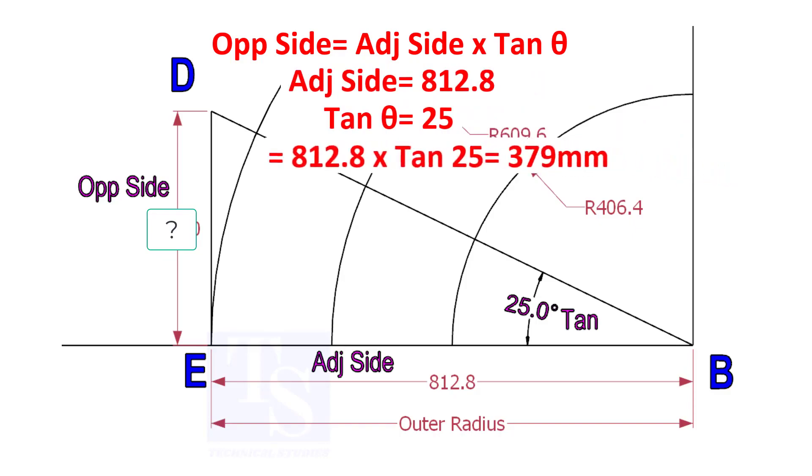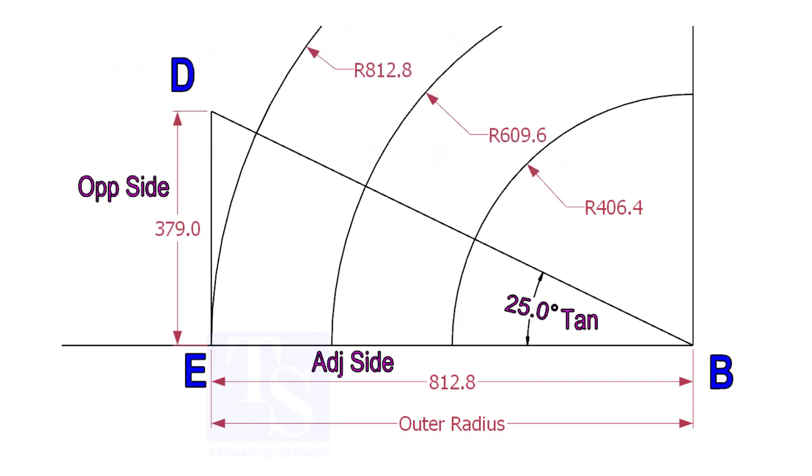812.8 into tan 25 equals 379 millimeters. Draw the line ED vertically and the slant line DB. I hope now you will be able to draw a line in any degree.